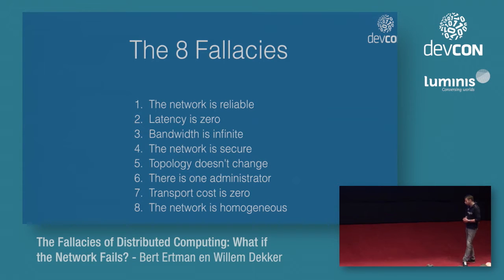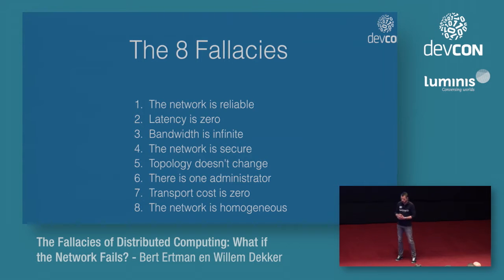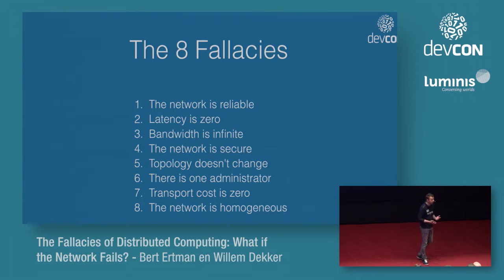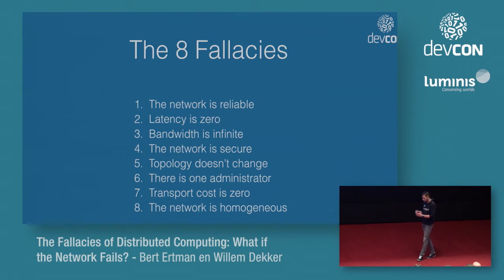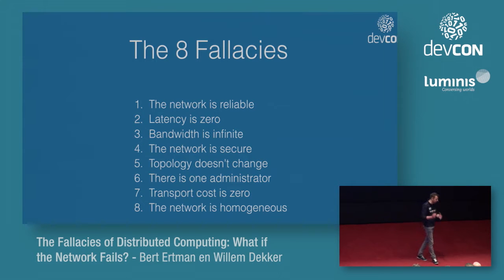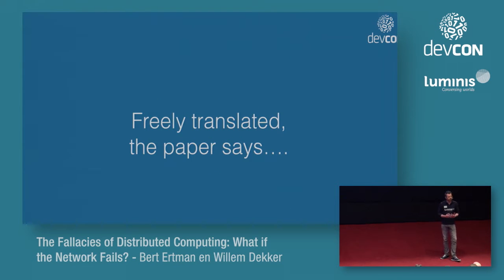Sun Microsystems was a visionary company. Back in those days they already had the vision of the network as the computer — that was one of their payoffs, their marketing tagline. If you look at it today, that vision has pretty much become a reality. We no longer call it the network or the computer; we call it the cloud. So the assumptions and warnings that Sun issued back then are probably still something we should take into account today.